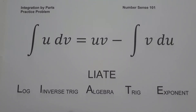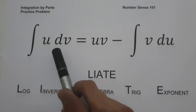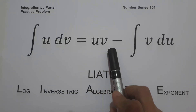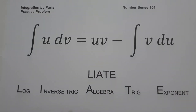In today's video, we are going to have a practice problem on how to solve indefinite integrals using integration by parts. We have a formula that you need to remember: the antiderivative of u dv is equal to uv minus the antiderivative of v du.